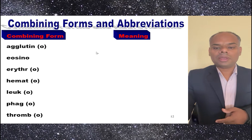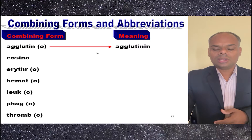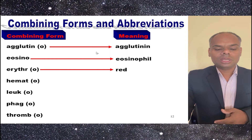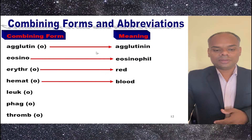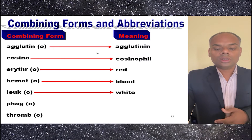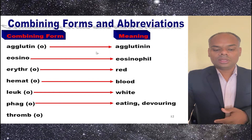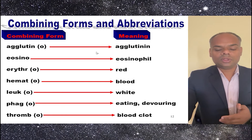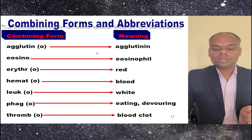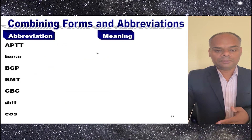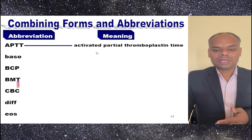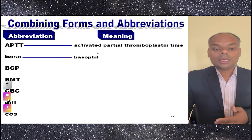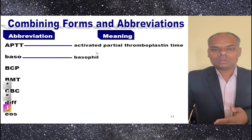Now comes combining forms. Agglutin means agglutinin. Eosino is eosinophil. Erythro is red. Hemat is blood. Leuk is white. Phag is phagocytosis, meaning eating or devouring. Thrombin refers to blood clotting. APTT means activated partial thromboplastin time. Baso is known as basophil.